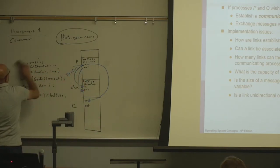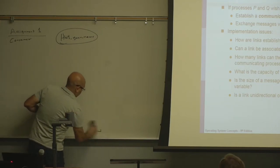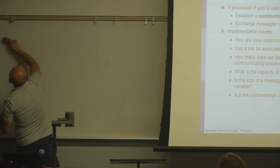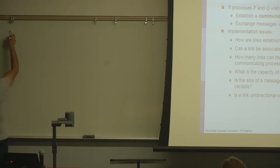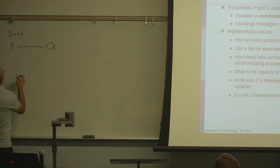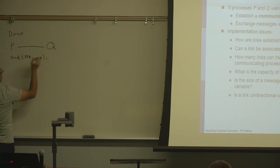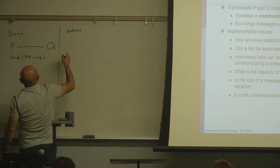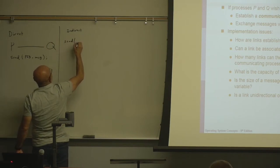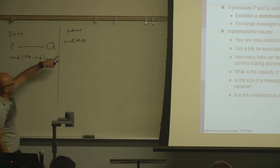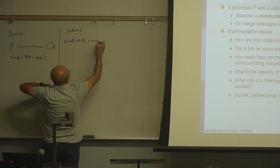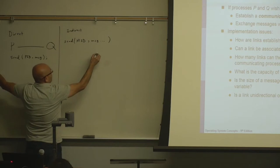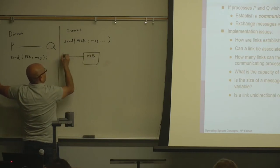The first scheme of communication is direct communication. In direct communication, you have process P and process Q, and they communicate directly. You do send with a process ID and a message. In indirect communication, you send to a mailbox ID — specifying a mailbox ID and a message. In this case, you have a mailbox and processes P and Q.